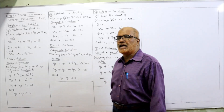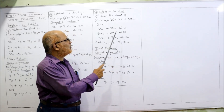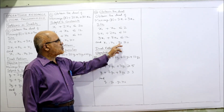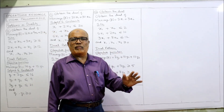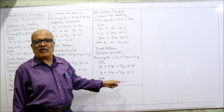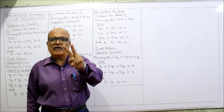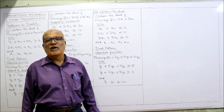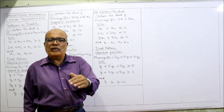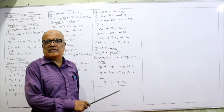There are two variables (X1, X2), so the dual will have two constraints. There are three constraints, so the dual will have three variables: Y1, Y2, Y3. The restrictions of the primal (2, 10, 12) become the coefficients of the dual objective function.